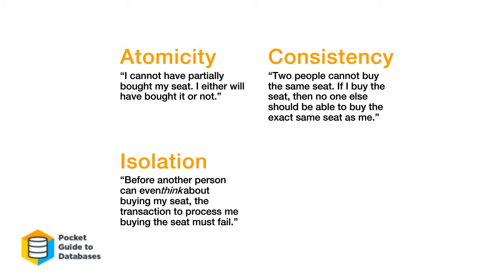Isolation means that before another person can even think about buying your seat, your transaction process for that seat has to fail first. You'll see this a lot with ticket sales — when you're filling out a form to buy a concert or airline ticket, it'll say something like 'you have 30 minutes to complete this transaction.' They want to make sure nobody else is looking at or buying that seat until your transaction has either completed or failed. This ensures there aren't a lot of simultaneous writes to the same object.